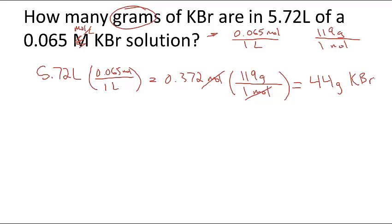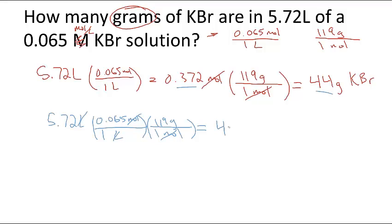Remember when I told you I wanted you to do it this way because we're going to have multiple conversions? You can do this all in one step. 5.72 liters, I know 1 liter has 0.065 moles, and I know that 1 mole has 119 grams. I don't have to do this two-step process, I can do it all at once where liters cross out, moles cross out. I just do 5.72 times 0.065 times 119 divided by 1, and I still get my 44 grams of KBr.